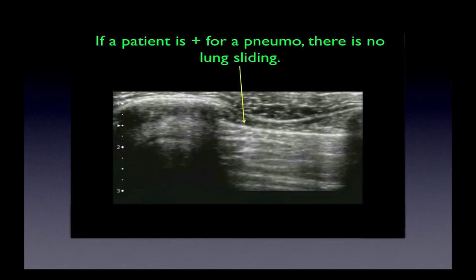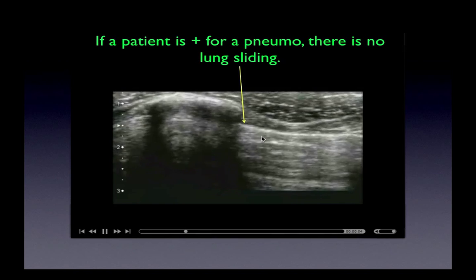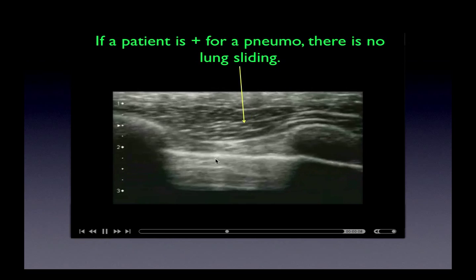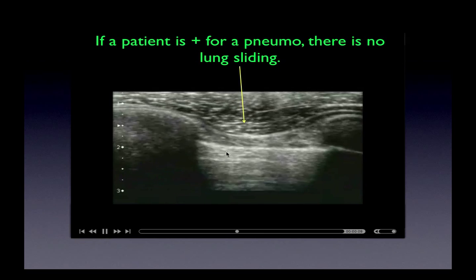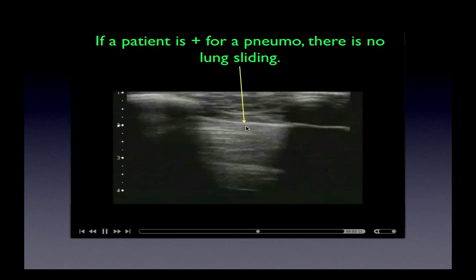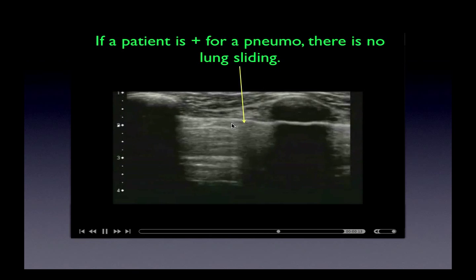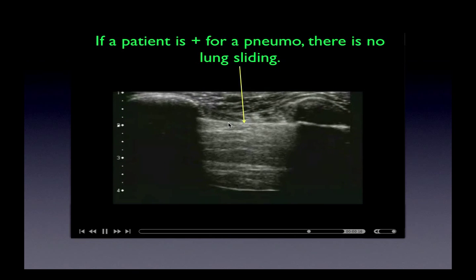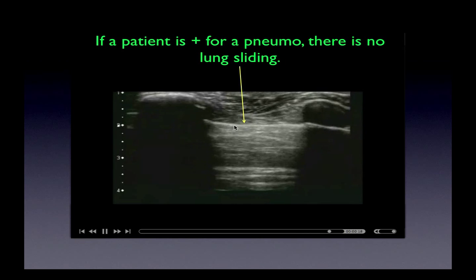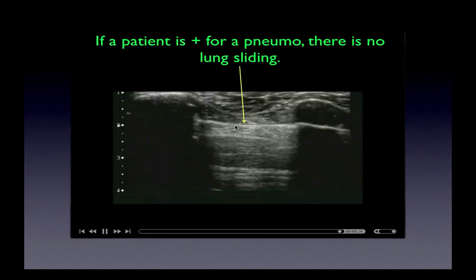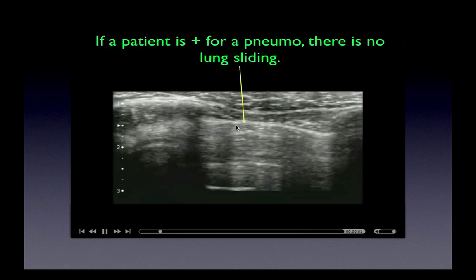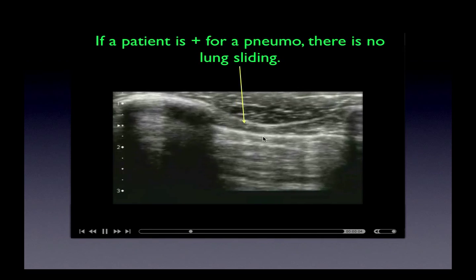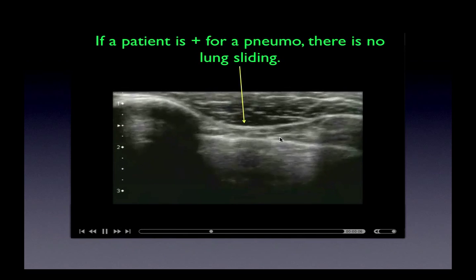Now, if a patient has a pneumothorax and we look at this line, there's no movement whatsoever. Again over here, no movement of this line whatsoever. This is a classic visceral-parietal interface appearance for a pneumothorax — same here, no movement.